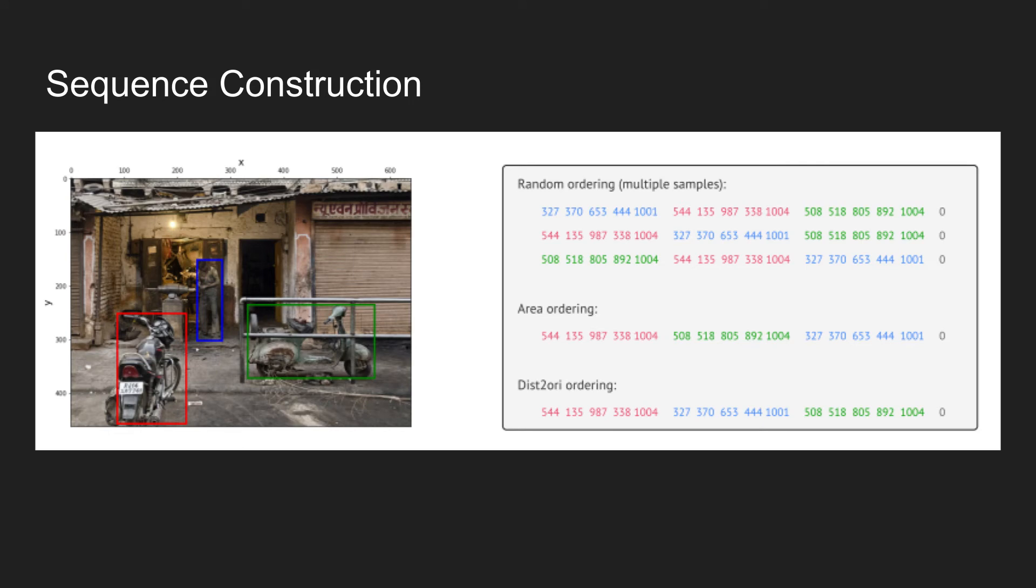Now, one might also wonder how ground truth generation should be done. There are multiple objects in an image and if one wants to predict this in an autoregressive manner, we need to think of the ordering of the objects. For example, in this image we could question should person label come first before the motorcycles or should the motorcycles come before the person label.